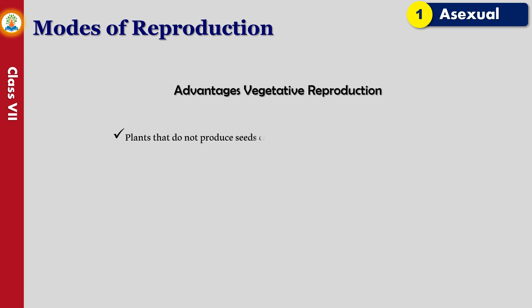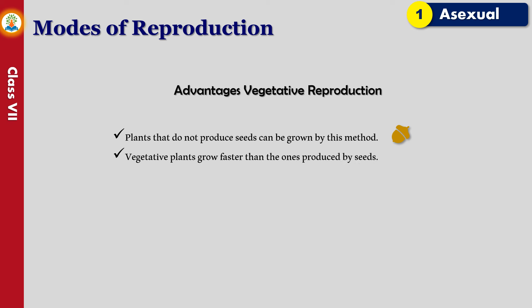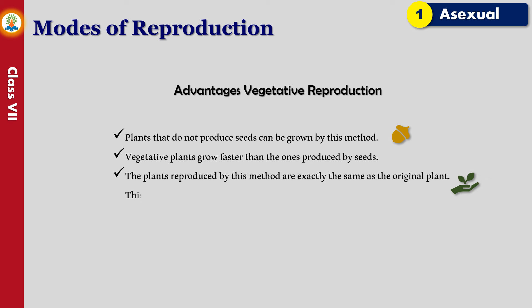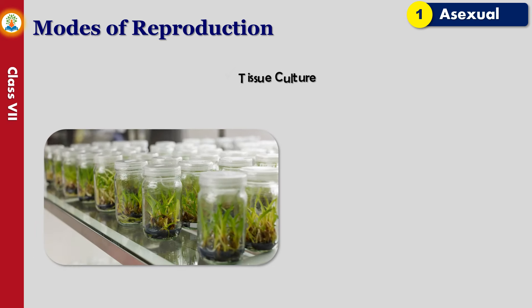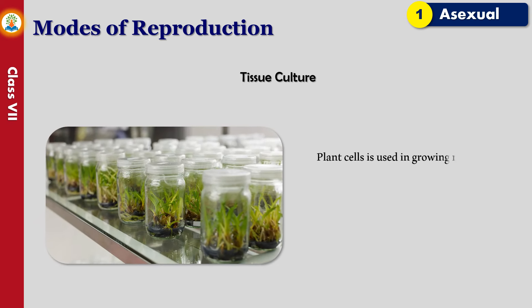The advantages of vegetative reproduction are as follows: plants that do not produce seeds can be grown by this method; vegetative plants grow faster than ones produced by seeds; the plants reproduced by this method are exactly the same as the original plant, which is helpful for farmers as they get exact copies of the required plant; and these plants need less attention compared to plants grown by other types of reproduction.